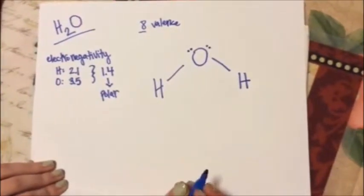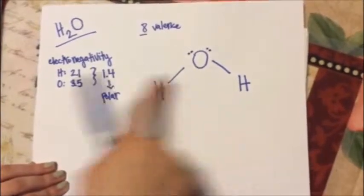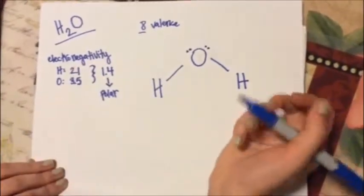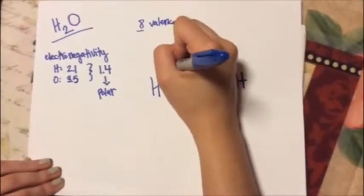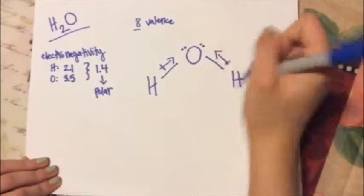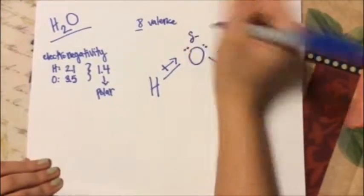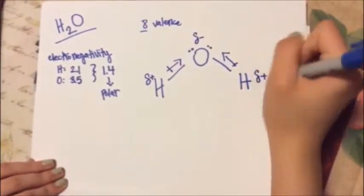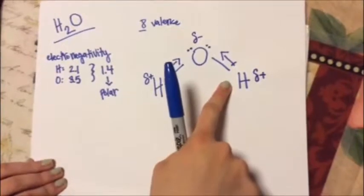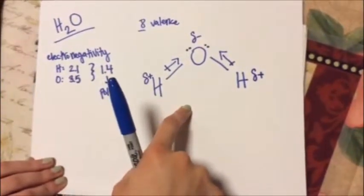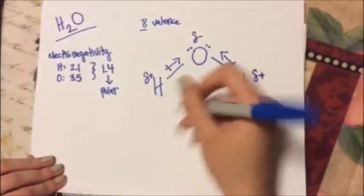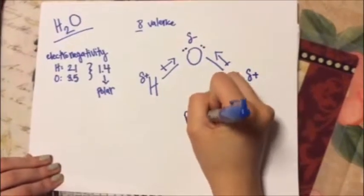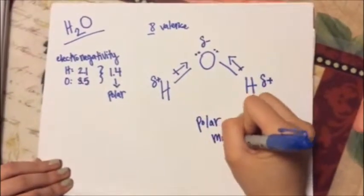Then to draw the vectors, since oxygen has a higher electronegativity, the vectors will be pointing towards oxygen. This will make oxygen partially negative and will make both the hydrogens partially positive. Since the vectors do not cancel, this is a polar molecule. So water is polar.